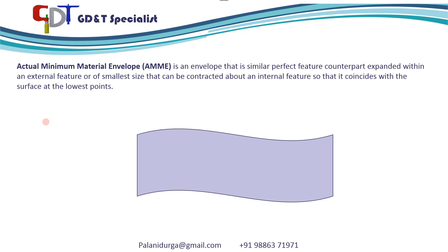Actual minimum material envelope is an imaginary envelope. As per the standard, the definition is: actual minimum material envelope is an envelope that is a similar perfect feature counterpart expanded within an external feature, or of the smallest size that can be contracted about an internal feature, so that it coincides with the surface at the lowest point.